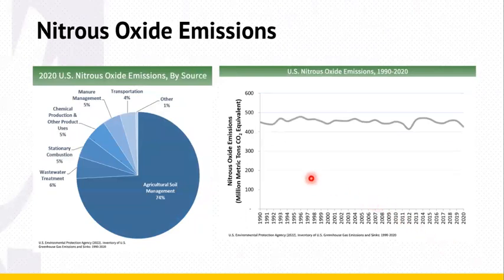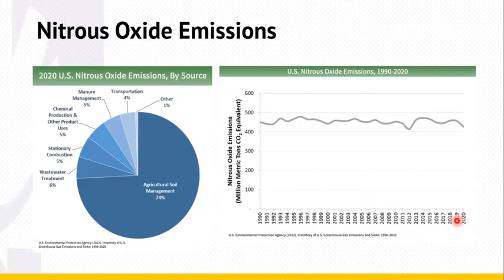Next is nitrous oxide emissions. Nitrous oxide can result from various agricultural soil management activities. Nitrous oxide emissions in the US decreased by 5% between 1990 and 2020. During this time, nitrous oxide emissions from mobile combustion decreased by 61% as a result of emission control standards for on-road vehicles. Nitrous oxide emissions from agricultural soils have varied during this period and were about the same in 2020 as in 1990.